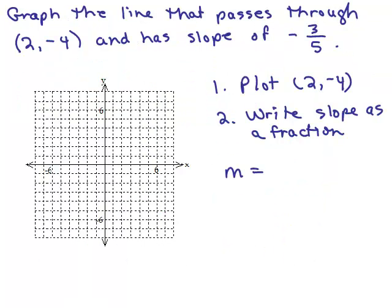Here's another example: graph the line that passes through 2, negative 4, and has a slope of negative 3 fifths. The first thing we do is plot the point we know is on the line. So we plot 2, negative 4 — starting from the origin, go over 2 and down 4.